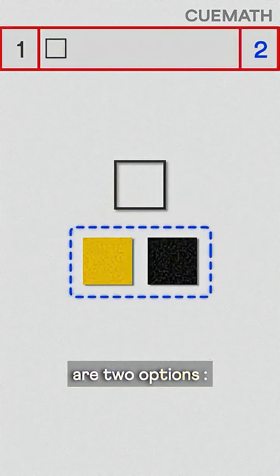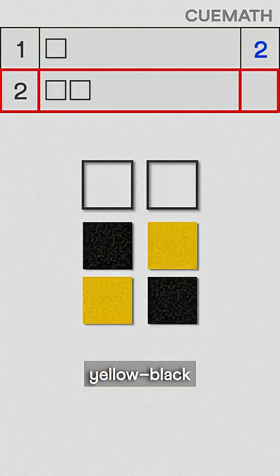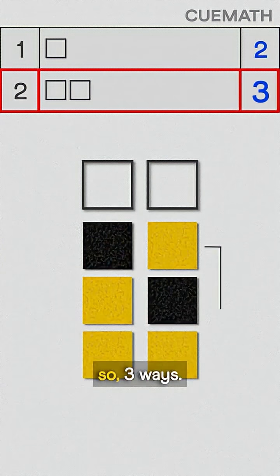With one tile there are two options, yellow or black. Two tiles, black yellow, yellow black, or yellow yellow. So three ways.